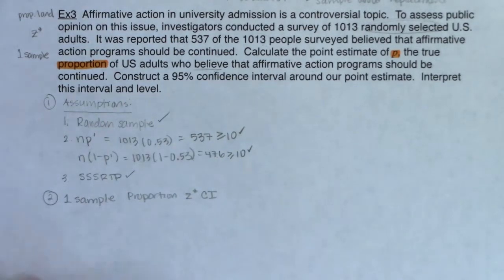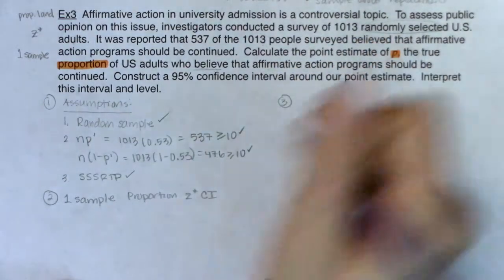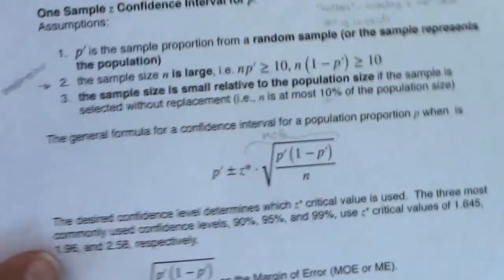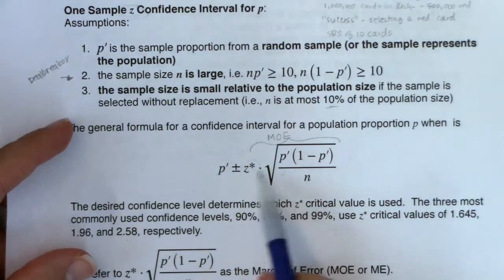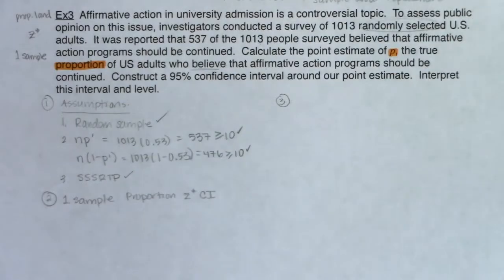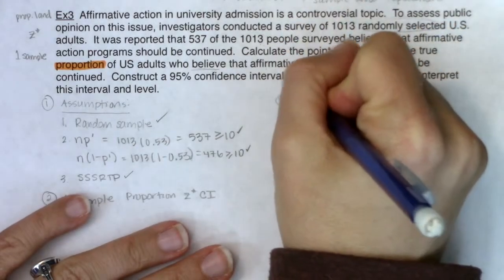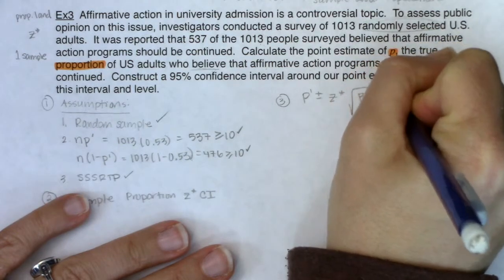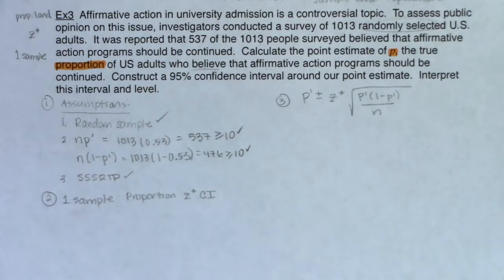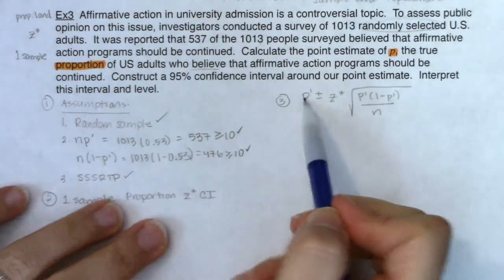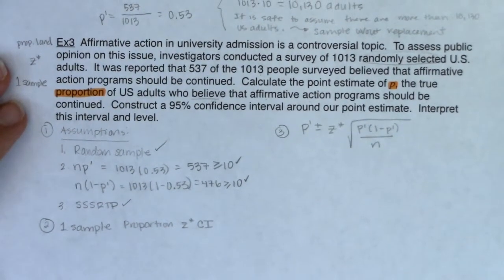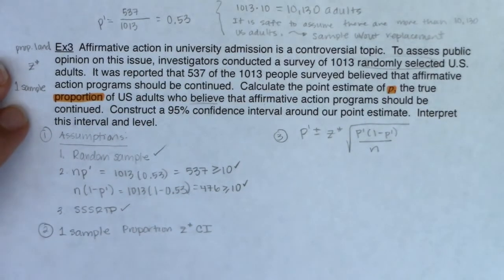The title is: One-Sample Proportion z* Confidence Interval — abbreviated CI. Now for the construction. The formula is: p-prime ± z* × sqrt(p-prime(1 − p-prime)/n). Let me copy this formula and fill in the numbers. Our p-prime = 0.53, n = 1,013. For a 95% confidence level, z* = 1.960 from the bottom row of the table.